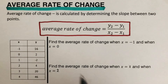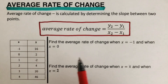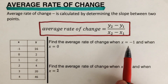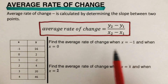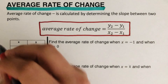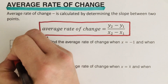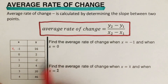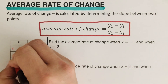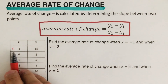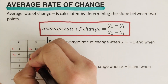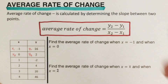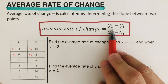So let's take this example right here. I have a table and we are supposed to determine the average rate of change for when x is equal to negative 1 and when x is 0. When x is negative 1, I will label this as our x sub 1. And then x is 0, I will label this as our x sub 2. On the other side, I will label this as our y sub 1 and this is our y sub 2.